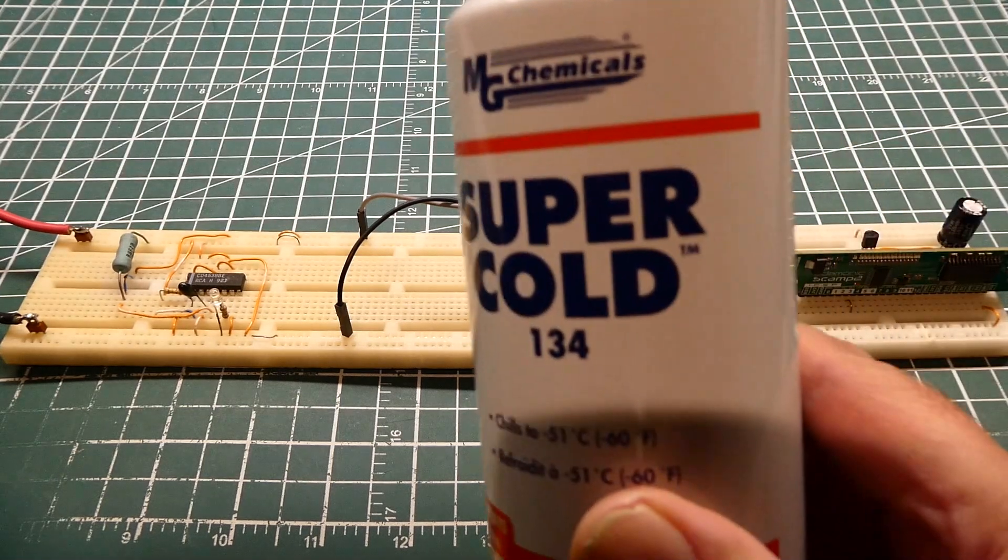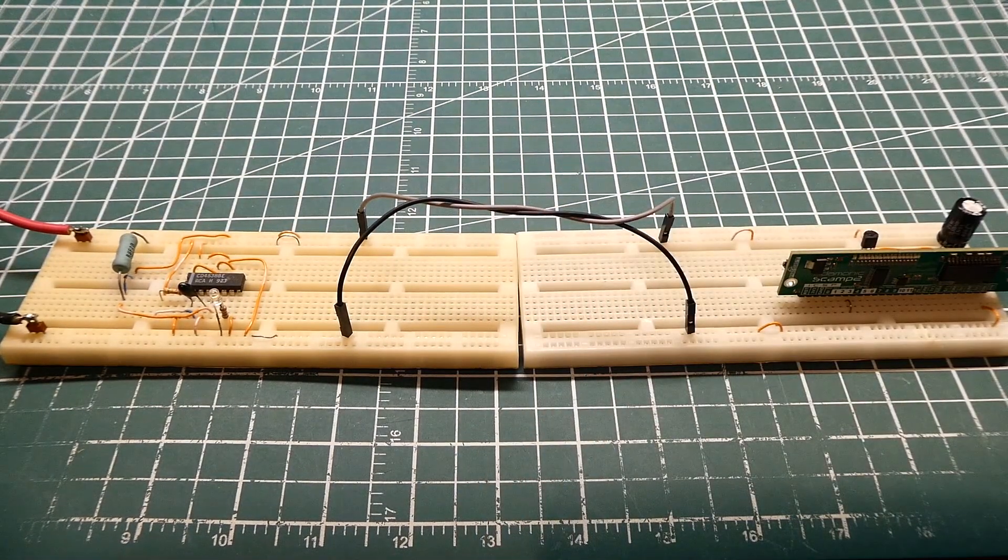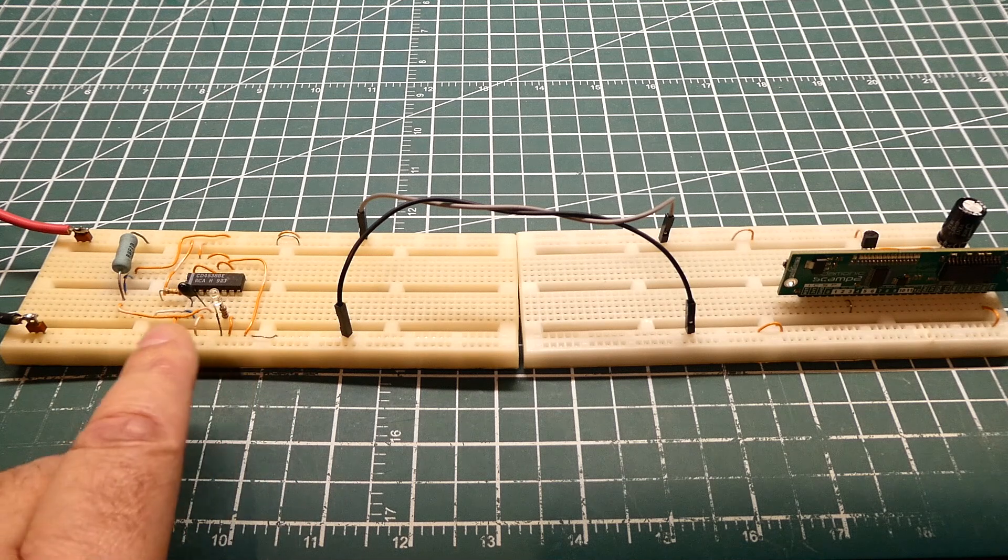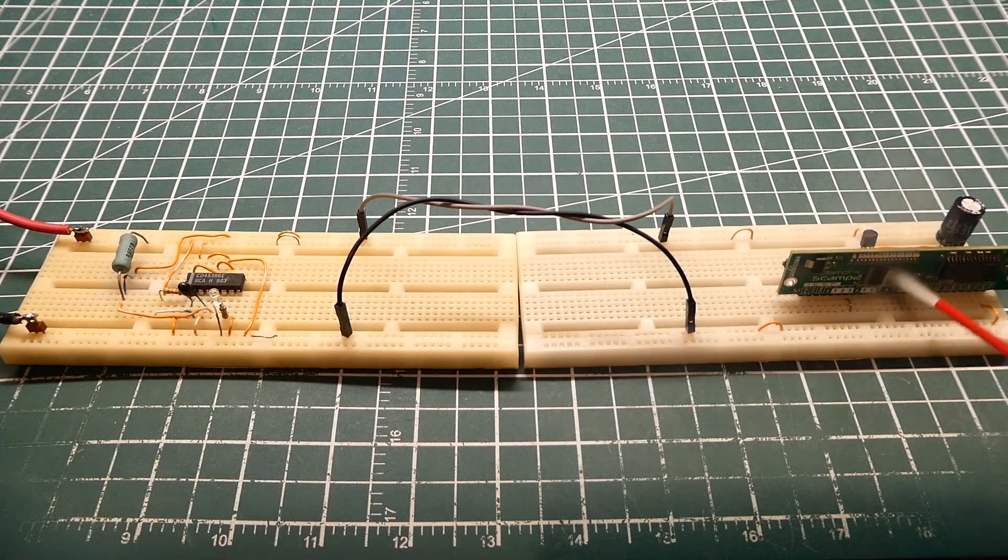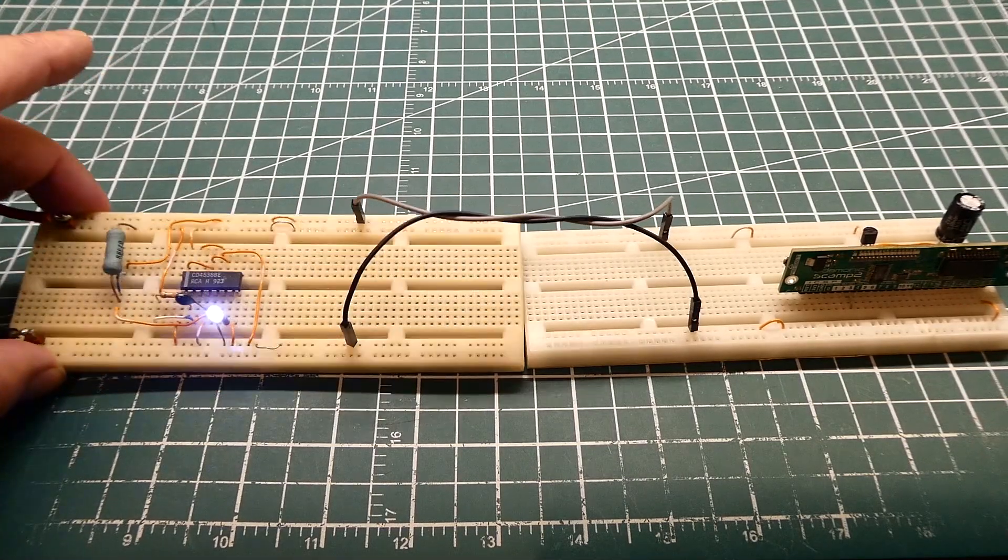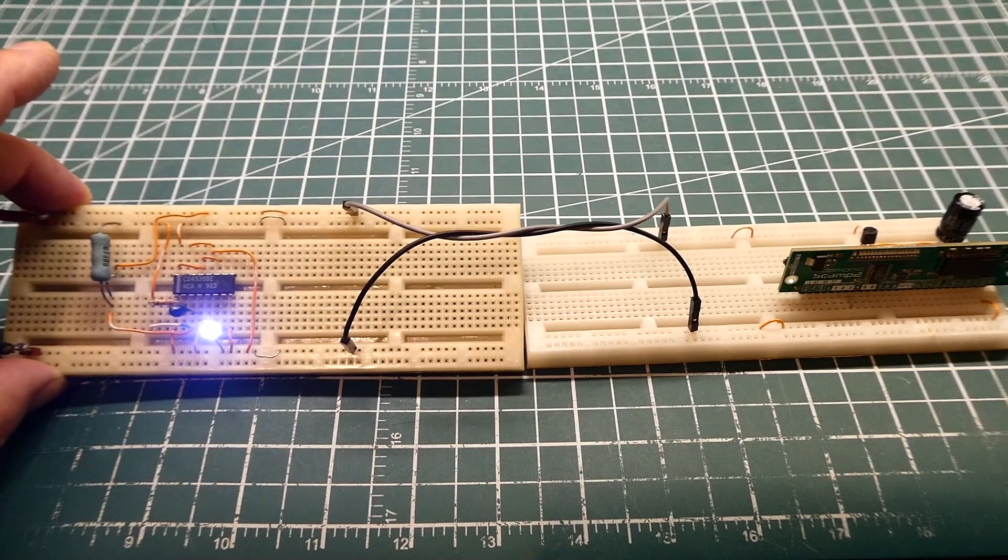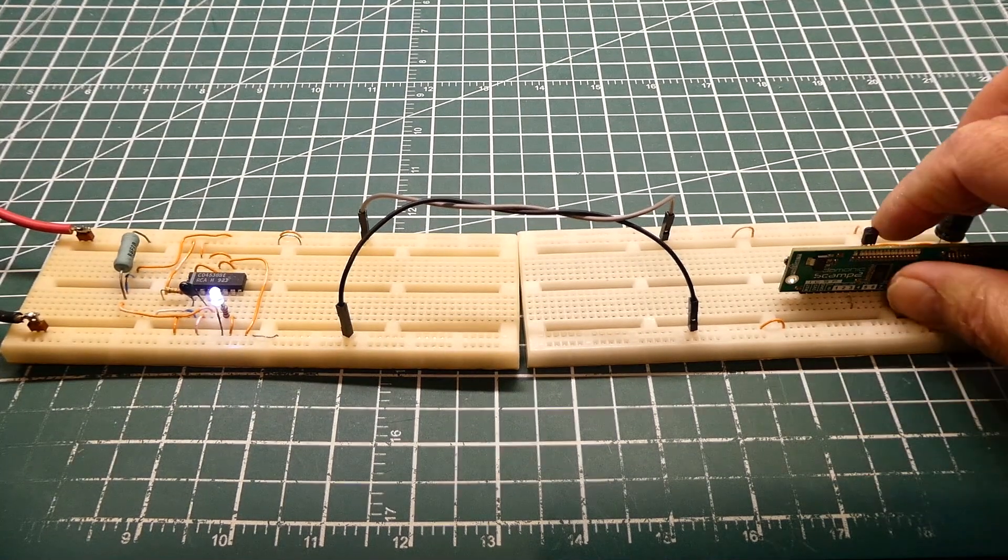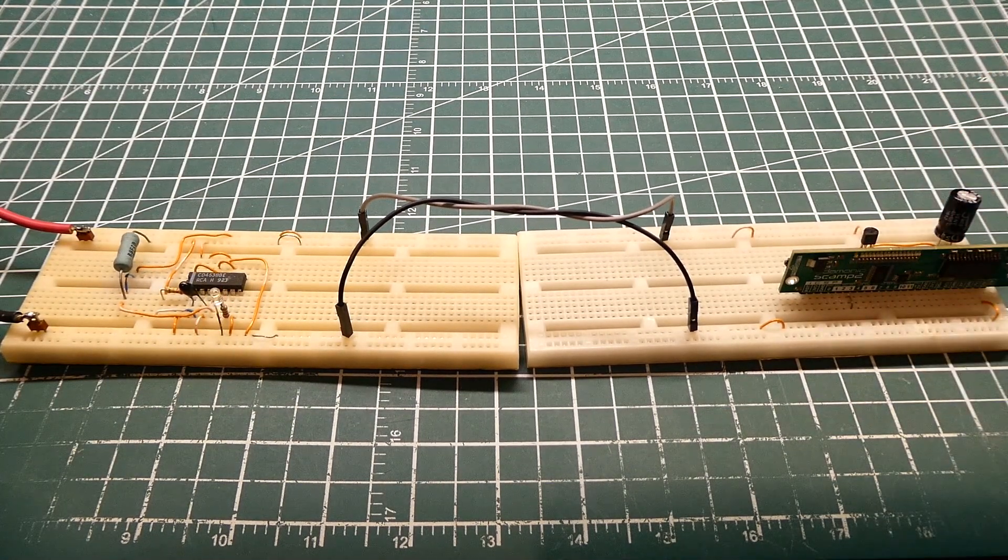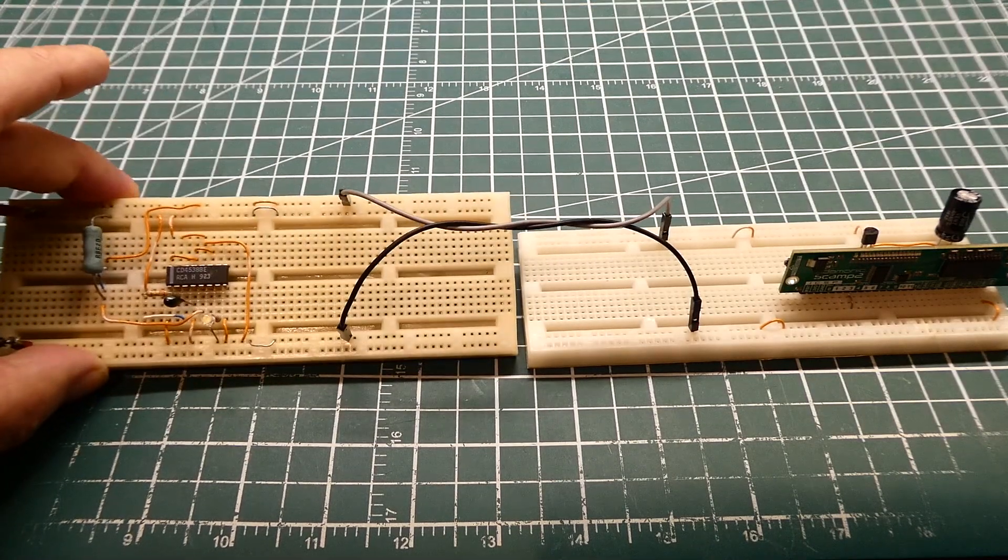I have some cold spray so if I spray the sensor it's going to detect it and this LED over here will come on. So I'll spray the sensor. You can see the LED, it's come on indicating the threshold has been exceeded. And if I put my finger on the sensor to warm it up, you see the LED goes out.